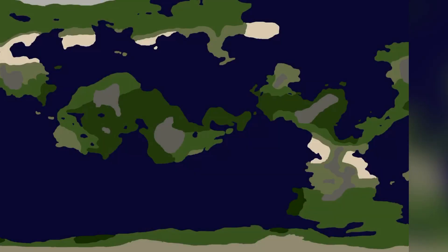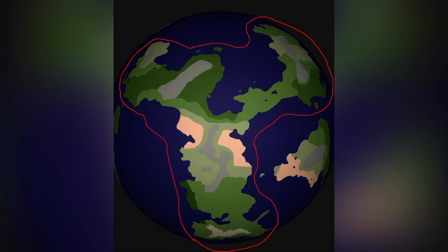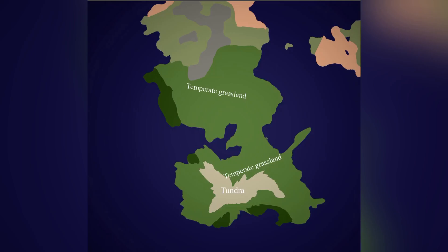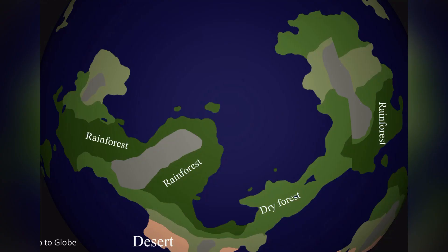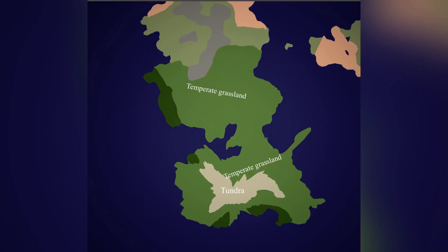The largest continent of Swafinia is Miratica, a continent so large that it spans throughout all the climate regions, from the southern pole to the equator of Swafinia. Being almost a supercontinent on its own, Miratica has a variety of climates — from temperate grassland to tropical rainforests, to dry deserts and dry forests, and having the only tundra found in Swafinia, with this tundra being found on the southern pole of Swafinia where some of Miratica's landmass lies.